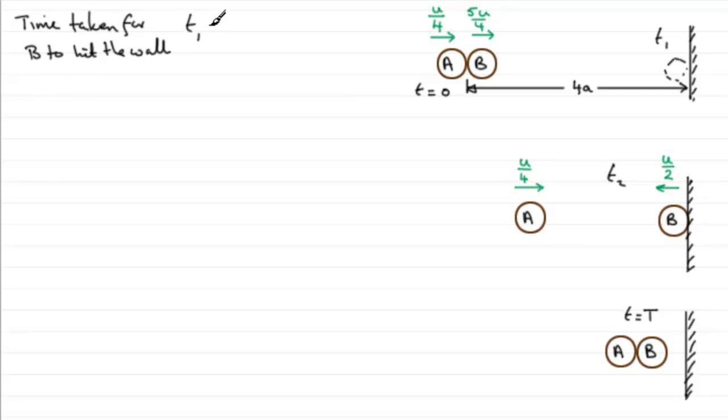We'll call it t1 then. And t1 equals, well, because they're moving at constant speeds, time is equal to the distance divided by the speed. So the distance is 4a and we need to divide that by the speed, the speed of B, 5u over 4. If we multiply top and bottom of this fraction by 4, we'd end up with 16a over 5u. So that's the time it takes.